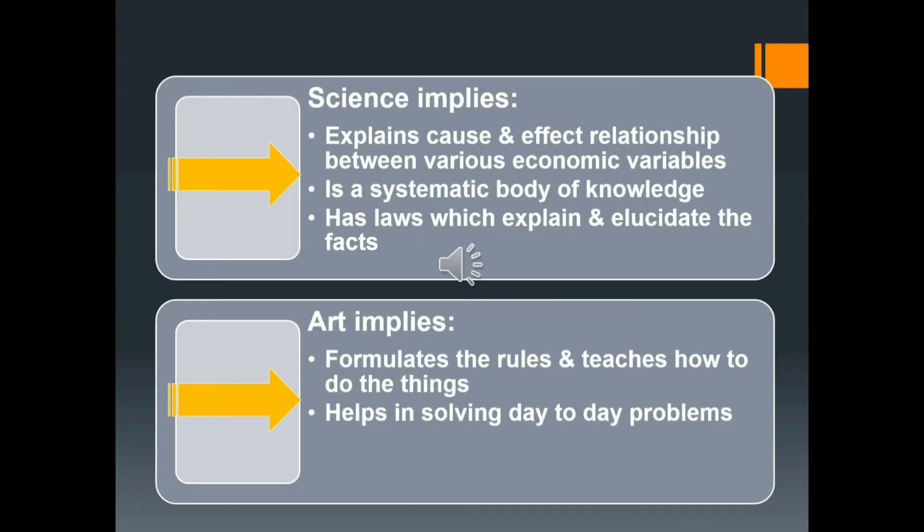Now let us understand, is economics a science or an art? Whether a particular branch of learning is to be regarded as science or not depends on what we considered a science to be. The term science implies that anything which explains the cause and effect relationship between various economic variables. Science is a systemized body of knowledge and not merely a collection of facts. Science also has laws which explain and elucidate the facts.